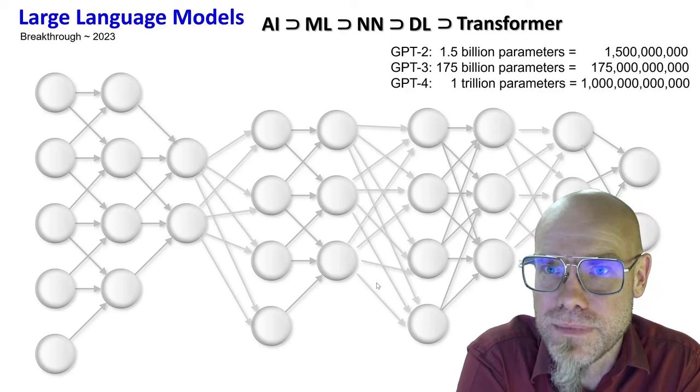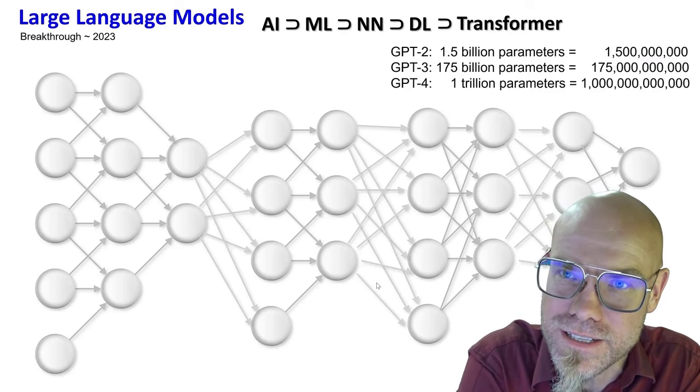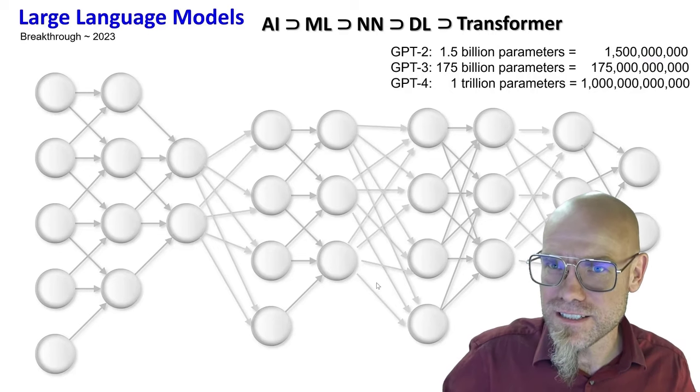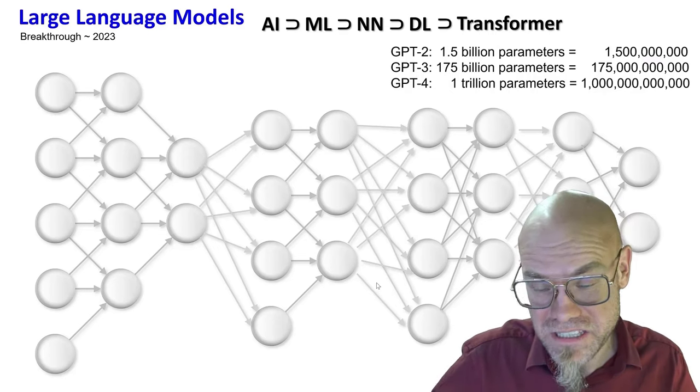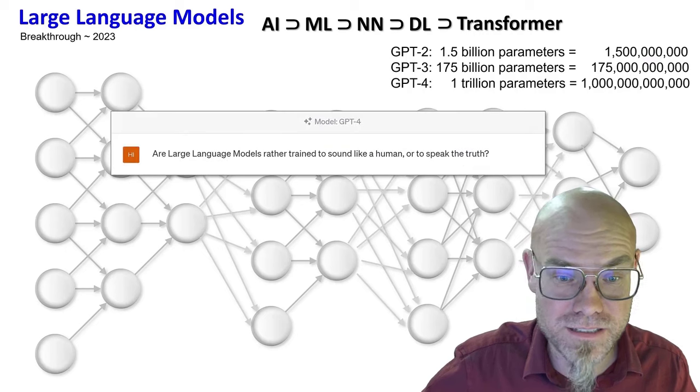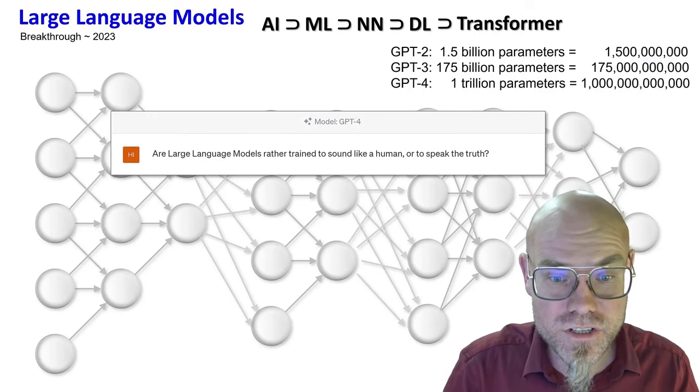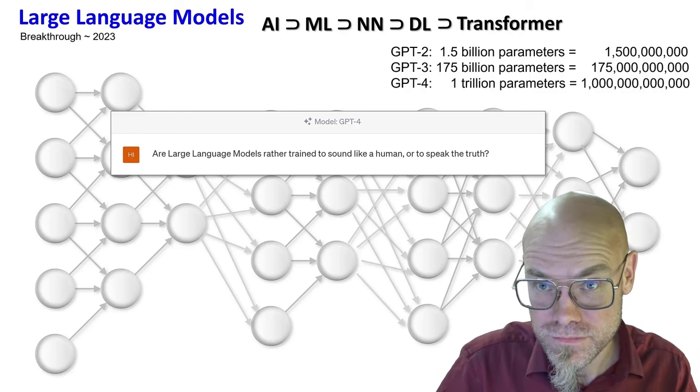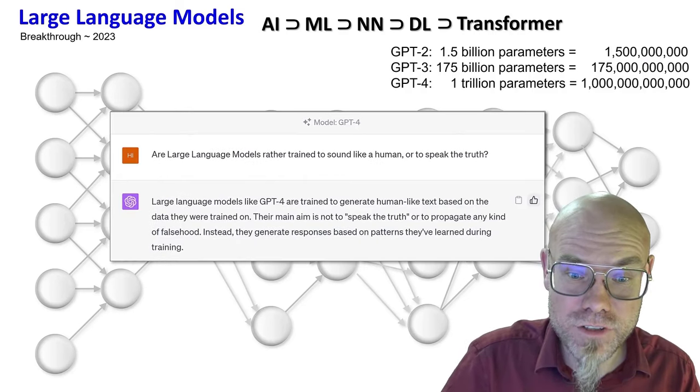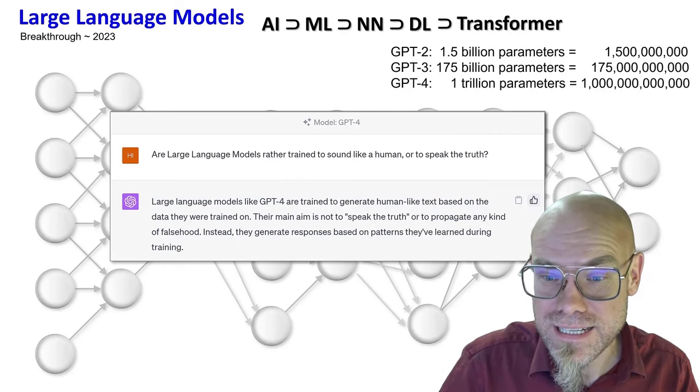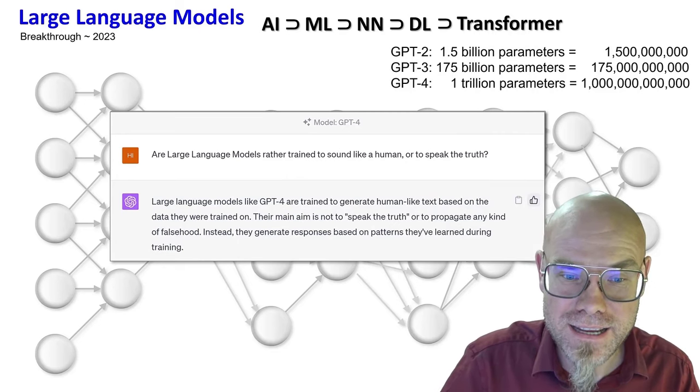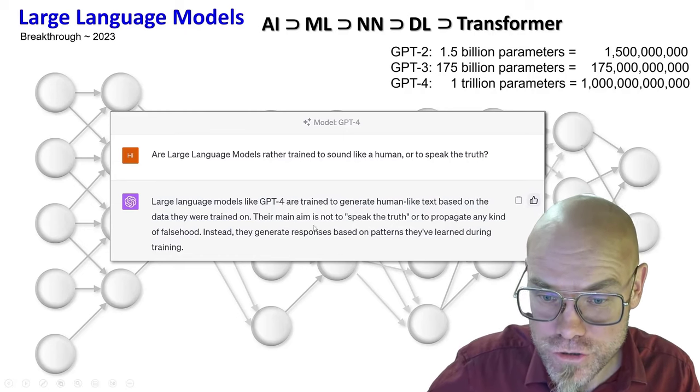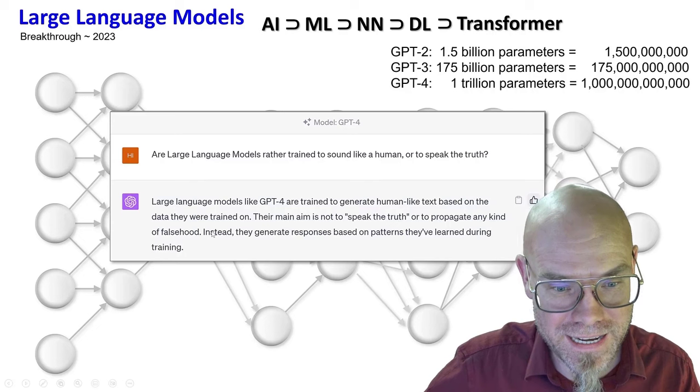It might sound like a scientific citation, but just from the pure large language model itself, that's not the task. The task is to sound like human. If you don't trust me, let's ask our large language models. Let's ask ChatGPT: 'Are large language models rather trained to sound like a human or to speak the truth?' Large language models like ChatGPT-4 are trained to generate human-like text based on the data they were trained on.